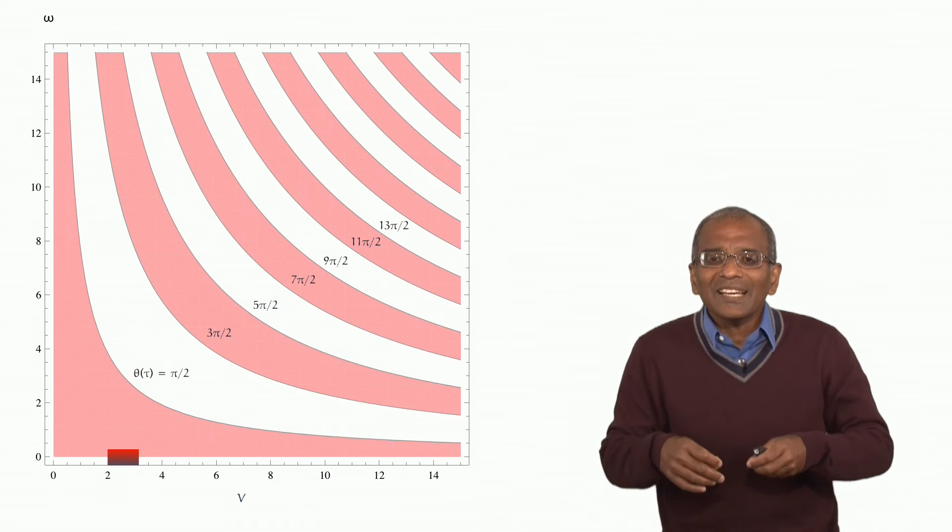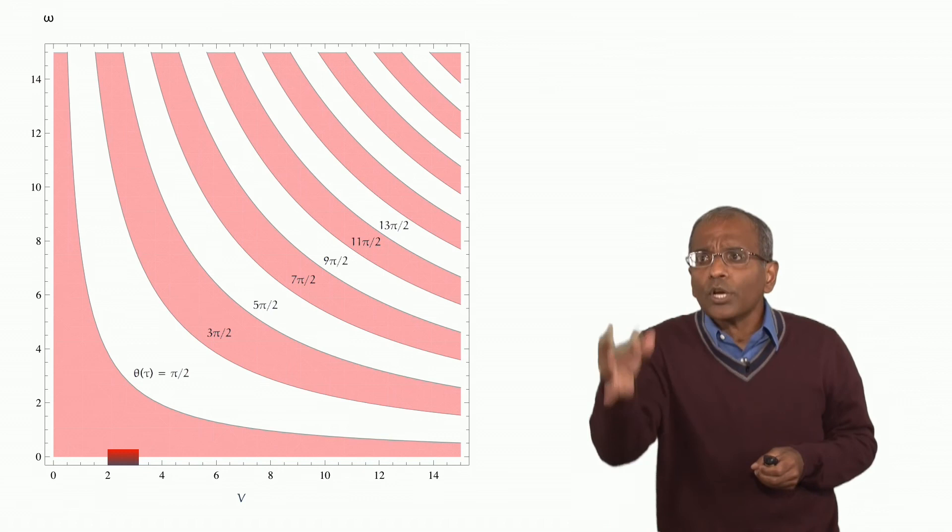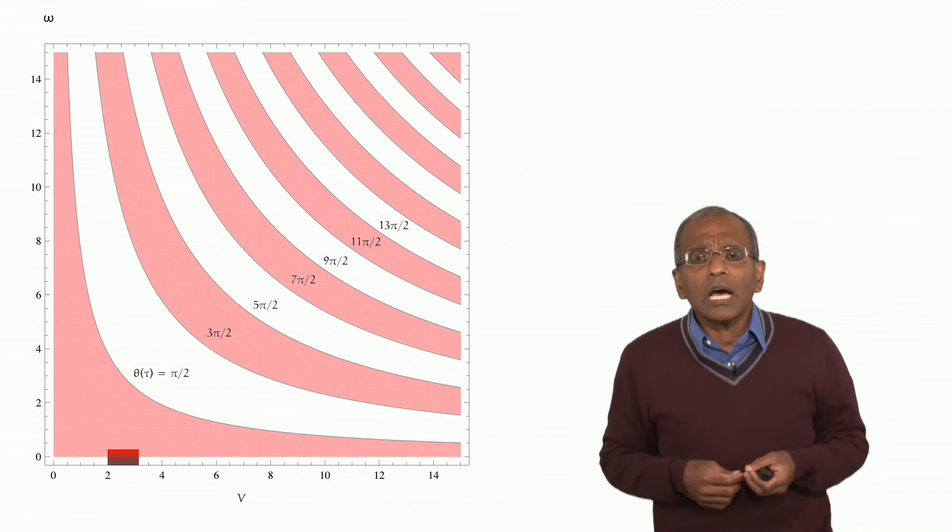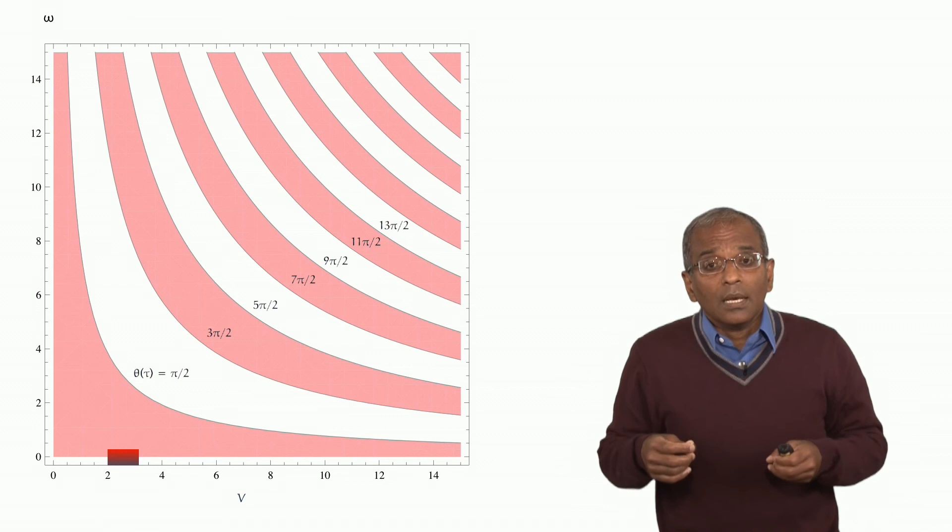And via such experiments, he concluded that a typical coin toss has an angular velocity of around 36 to 39 revolutions per second.